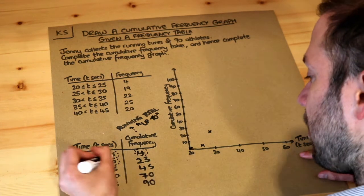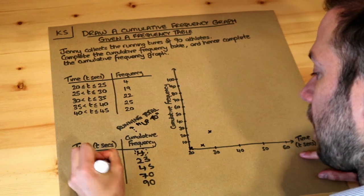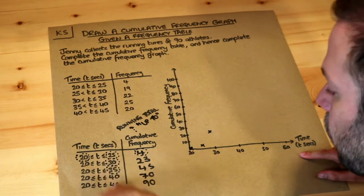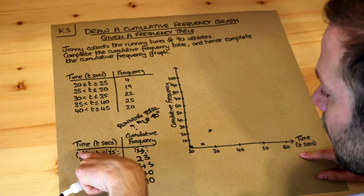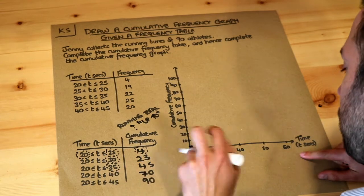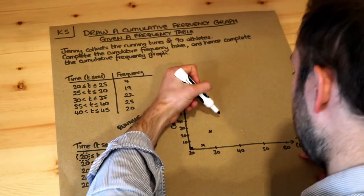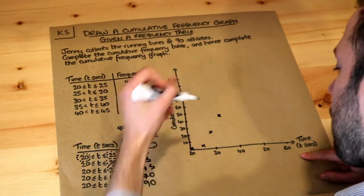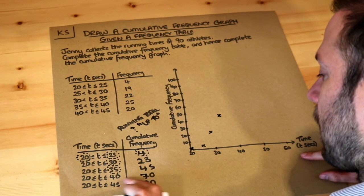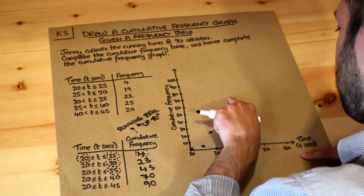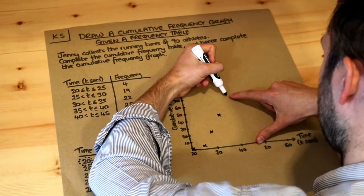Let's plot the other values. We've got 45 people with a time of up to 35 so we always use the right values here except for that 20 over here, so 35, 45 is about here. Then we've got 70 people with a time of up to 40 so 40, 70 is about here.